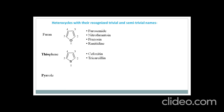Moving to the next one, which is pyrrole. Remember that 'pyr' indicates the ring has a nitrogen, and the ending '-ole' indicates it is a 5-membered ring. Pyrrole is a nitrogen-containing 5-membered ring, and as it has nitrogen as a heteroatom, we start the numbering from the nitrogen. So this is about the pyrrole ring with numbering.